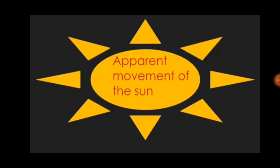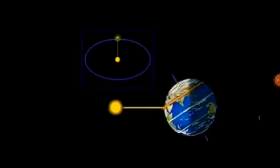Now let us study the changes in the position of sunrise and the difference in duration of day and night time. First, we learn about the apparent movement of the Sun. You must have realized through your observations that the position of the Sun at sunrise appears to change on the horizon every day, appearing to move towards the north or south over the course of a year.